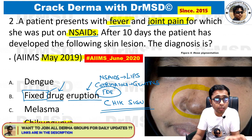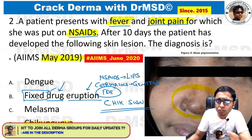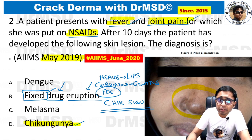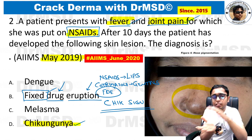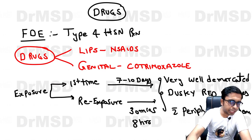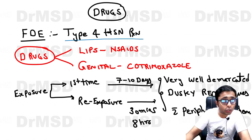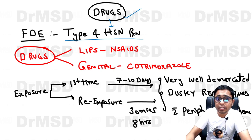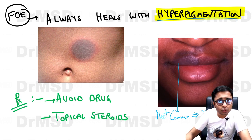Melasma produces symmetrical hyperpigmentation over the cheeks, which is not given in the history or image. The history of fever and joint pain, very common in chikungunya, correlates nicely with the image and the answer. FDE is an example of a type 4 hypersensitivity reaction — in fact, any drug rash a patient gets is due to type 4 hypersensitivity. FDE always heals with hyperpigmentation.